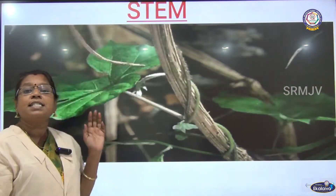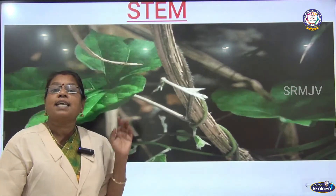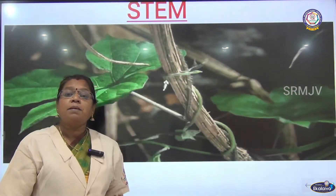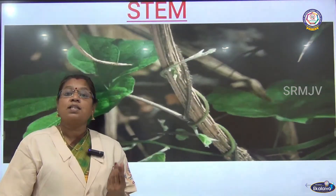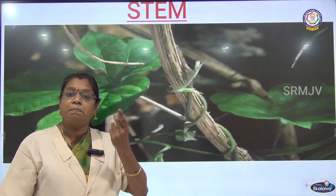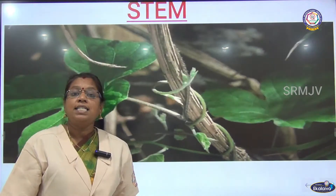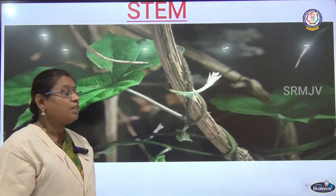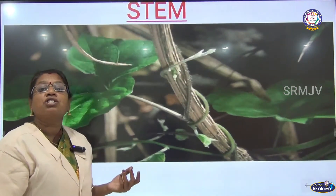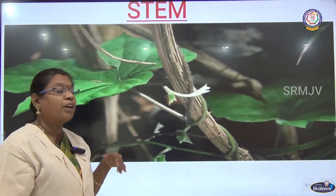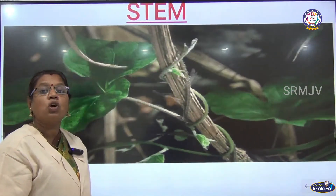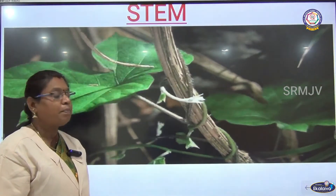Next is the stem. The stem helps the plant to stand straight and upright. It also carries food and water from the roots to all the other parts of the plant.